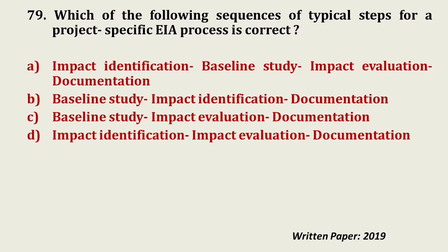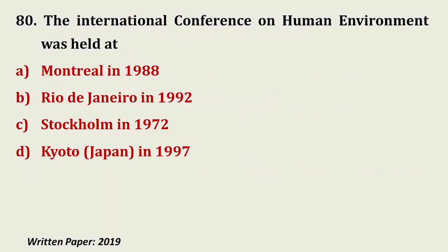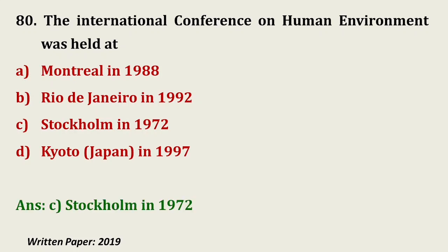Question number 79: Which of the following sequences of typical steps for a project-specific EIA process is correct? The correct sequence is: impact identification, then baseline study, then impact evaluation, then documentation.